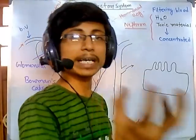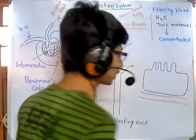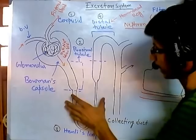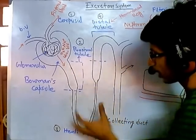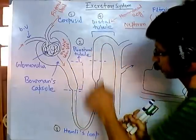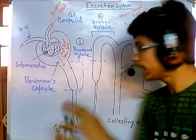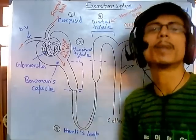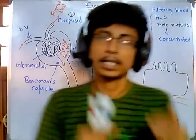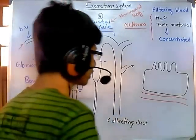In the proximal tubule, the cells have microvilli on their surface. Microvilli increase the surface area of the cells so they can absorb more materials — they are designed for absorption. In between, there are blood vessels everywhere. The whole proximal tubule, Henley's loop, distal tubule — all are coiled by blood vessels, because these tubes are permeable and nutrients, sodium ions, and water coming out need to go back into the blood.